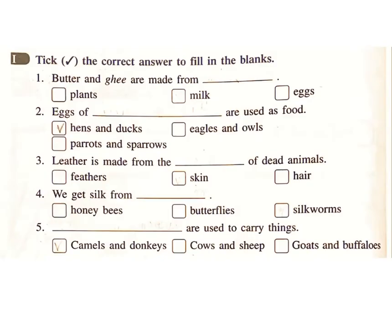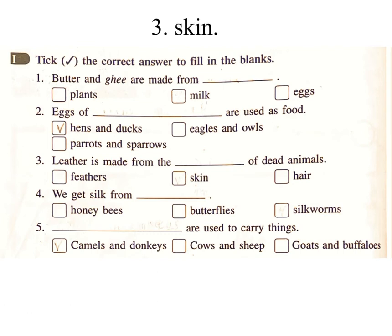Exercise 1: Take the correct answer to fill in the blanks. One: Butter and ghee are made from — plants, milk, eggs. Answer: Milk. Two: Eggs of which animal are used as food — hens and ducks, eagles and owls, parrots and sparrows? Answer: Hens and ducks. Three: Leather is made from the — of dead animals — feathers, skin, hair. Answer: Skin.